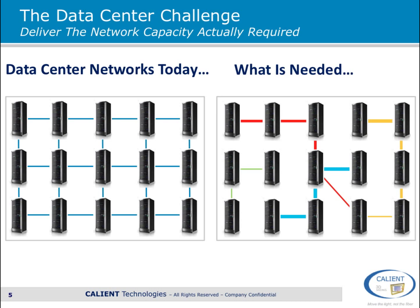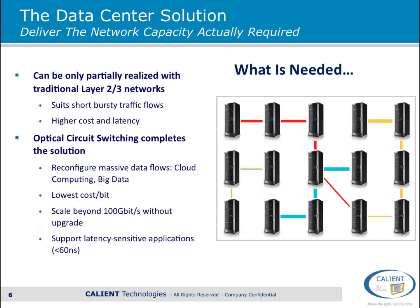On this slide — though it isn't animated — think of the colored connections between the servers and racks as moving and changing periodically as traffic flows demand. This network reconfiguration can only be partially realized with traditional switching and routing solutions. While they're suitable for short, bursty traffic, they typically can't support the switching of large data flows economically or with the low latency needed for many applications. Optical circuit switching complements this solution with the capability to economically reconfigure the network to support massive data flows with low latency, and to scale to 40 or 100 gigabits or even beyond as needs dictate.